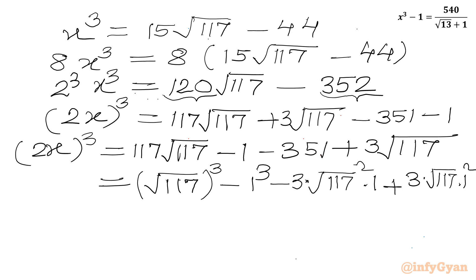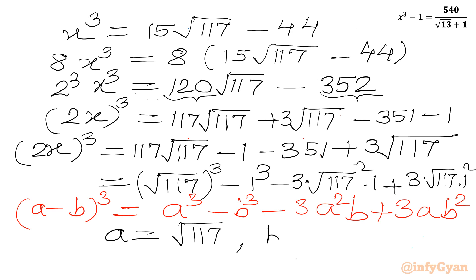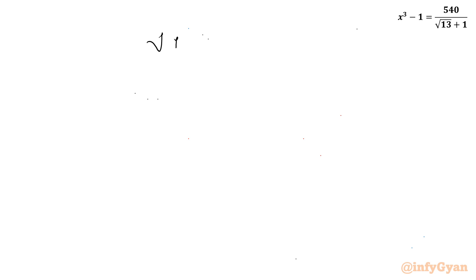We can see the RHS matches the algebraic identity (a - b)³ = a³ - 3a²b + 3ab² - b³, where a = √117 and b = 1. So we can write (2x)³ = (√117 - 1)³.